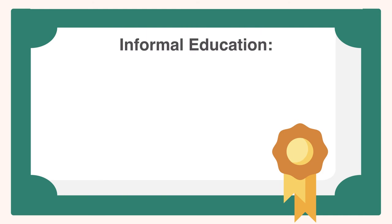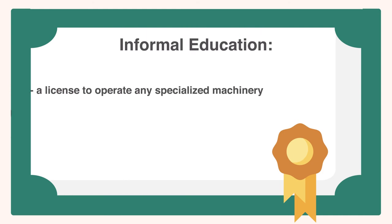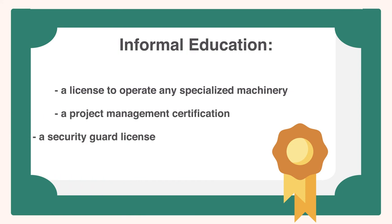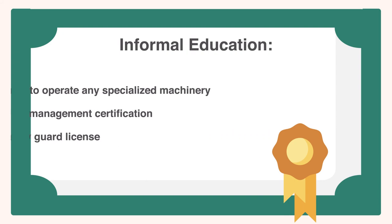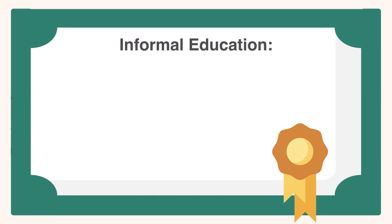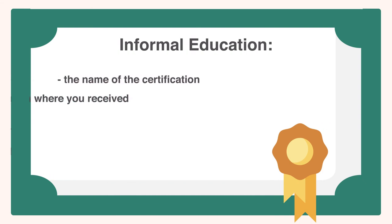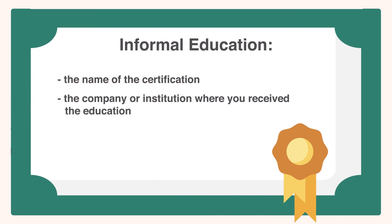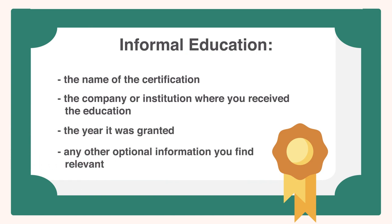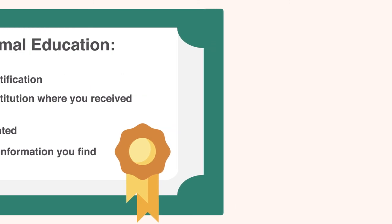Beneath your education section is where you would list any relevant certifications you hold or informal education you've received. For example, if you have a license to operate any specialized machinery, a project management certification, or a security guard license, this is where you would list it. Try to format these certifications in the same way you did for your formal education. List the name of the certification, the company or institution where you received the education, and the year it was granted, along with any other optional information you find relevant, though it's probably pertinent to keep your informal education even more to the point than your formal education.